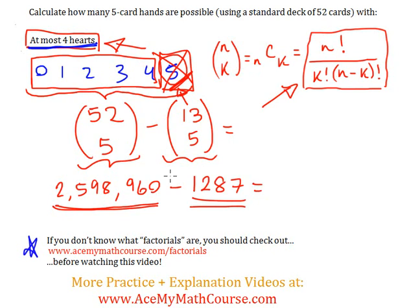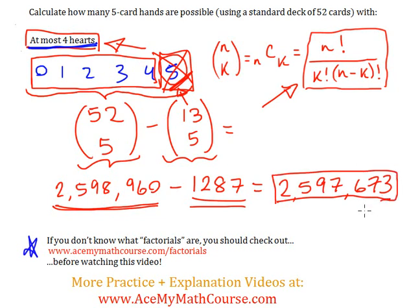So, now by subtracting them, we find our answer. And we get two million five hundred and ninety-seven thousand six hundred and seventy-three. And these represent the amount of hands with at most four hearts.